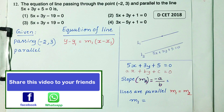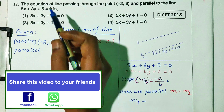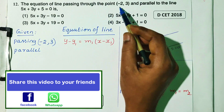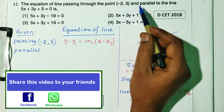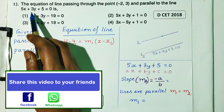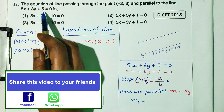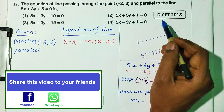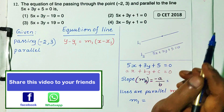Question number 12: the equation of line passing through the point (-2, 3) and parallel to the line 5x plus 3y plus 5 equals 0. DCT 2018.